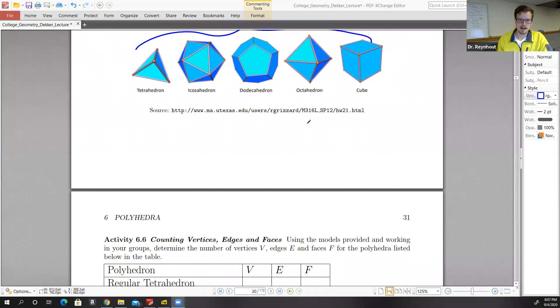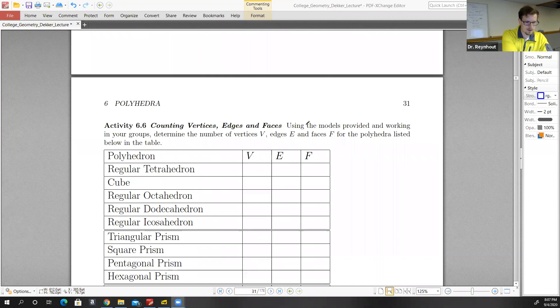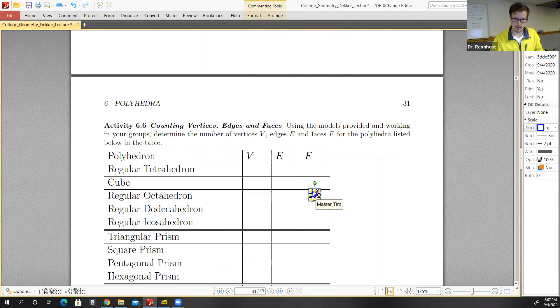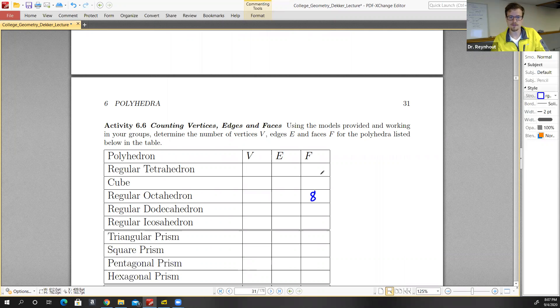So for the octahedron, we know that there are four from each angle there, for a total of eight faces.